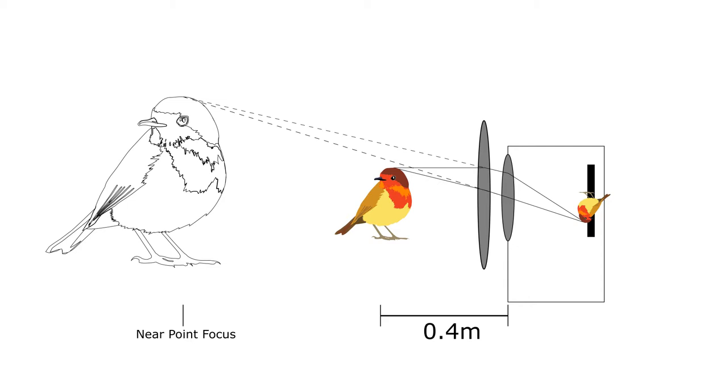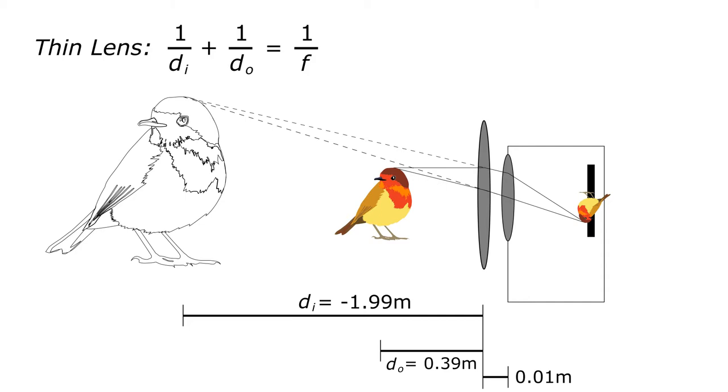The thin lens equation, which describes how the lens behaves, is based on the distance to the image, DI, and the distance to the object, DO. We can even account for the little space between the camera and the lens, which is about 1 centimeter. You might have noticed that DI is negative. That's because we follow the convention that if the image is on the same side of the lens as the object, then DI is negative. If it's on the opposite side of the lens, then DI is positive.